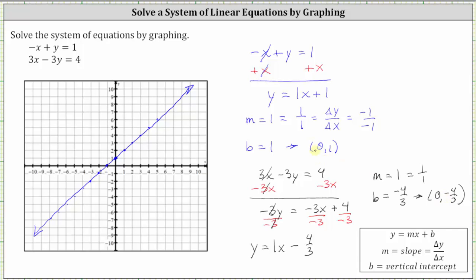Let's plot the vertical intercept of zero comma negative four thirds. Negative four thirds is equal to negative one and one third. So from the origin, go down one and one third units approximately here. And the slope is one over one. So we go up one, right one, up one, right one, up one, right one, and so on. Again, we know the lines are parallel. Let's go ahead and sketch the second line.